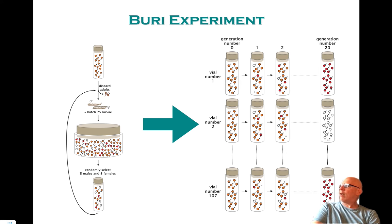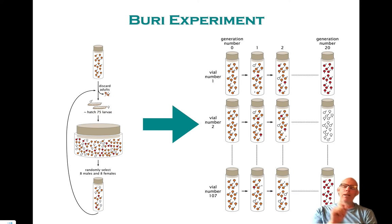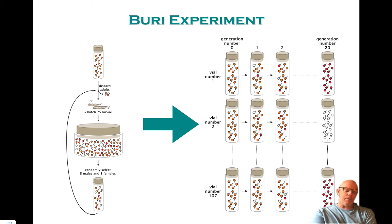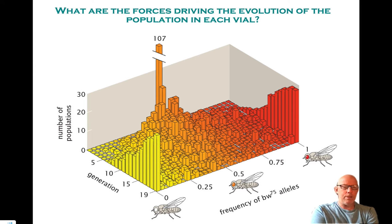Remember last time we showed how to calculate little p, which is the probability of big A, or the probability of a red. I multiply two times the number of red-eyed flies plus one times the number of orange-eyed flies, and I divide by two times the total number of flies — that gives me little p. That's what's plotted on the x-axis, labeled 'frequency of BW75 alleles,' which is the fraction of alleles that are red.